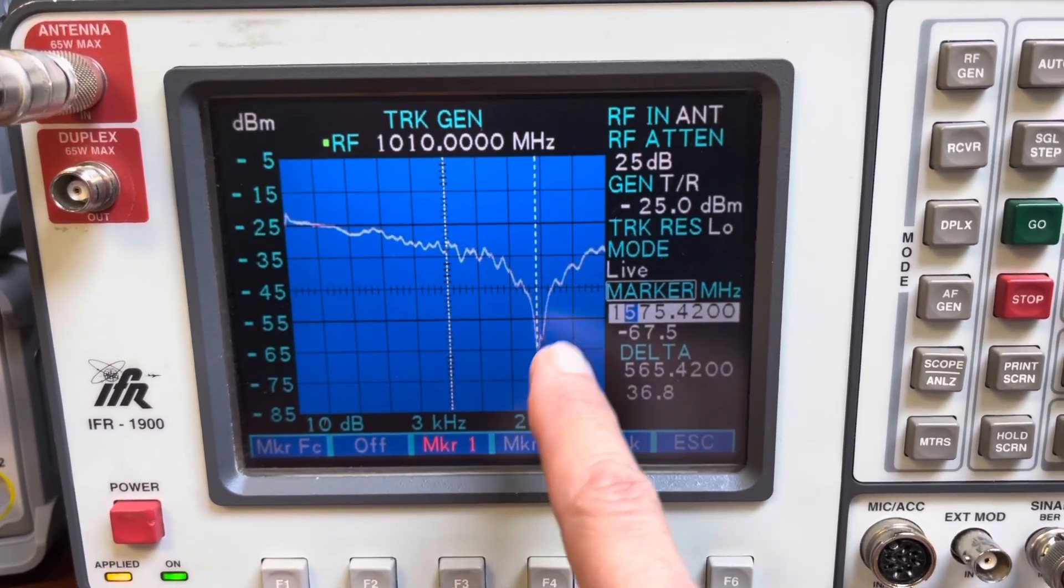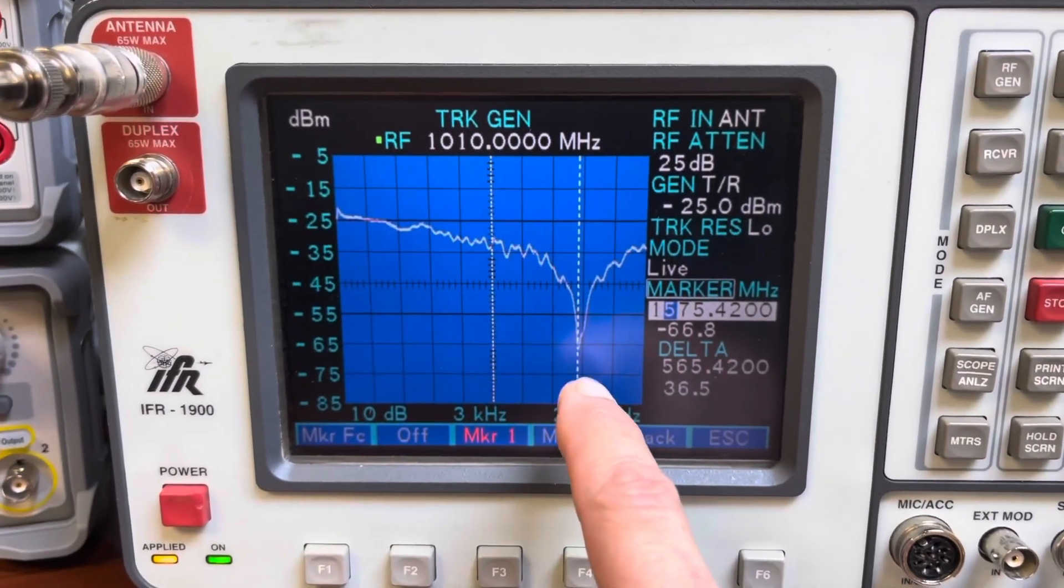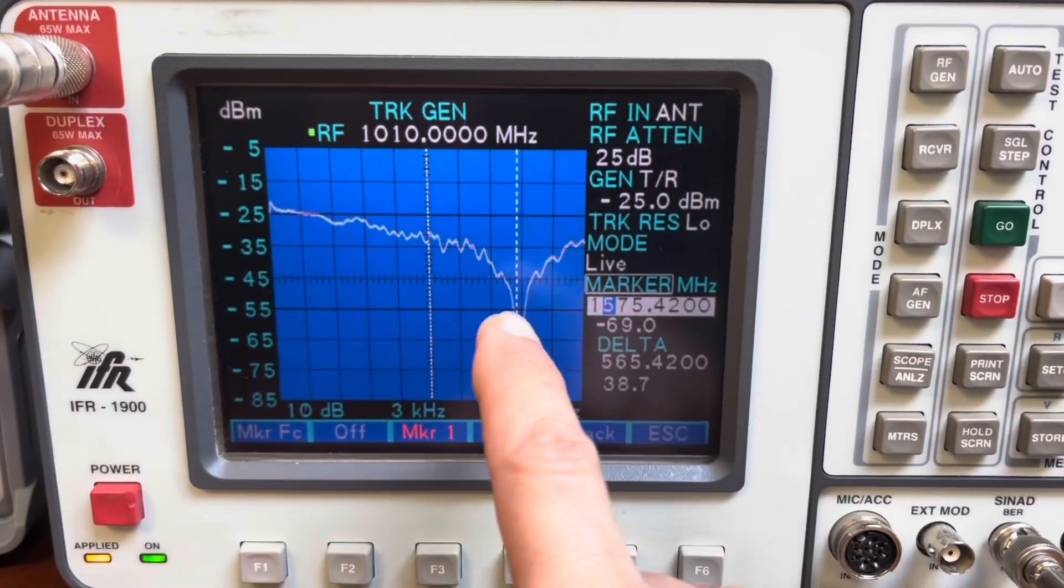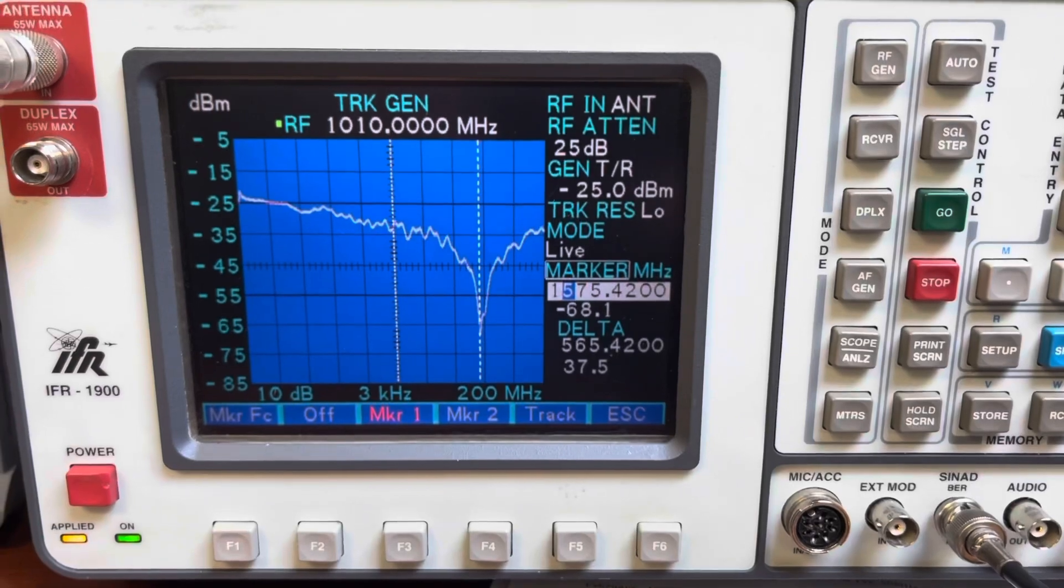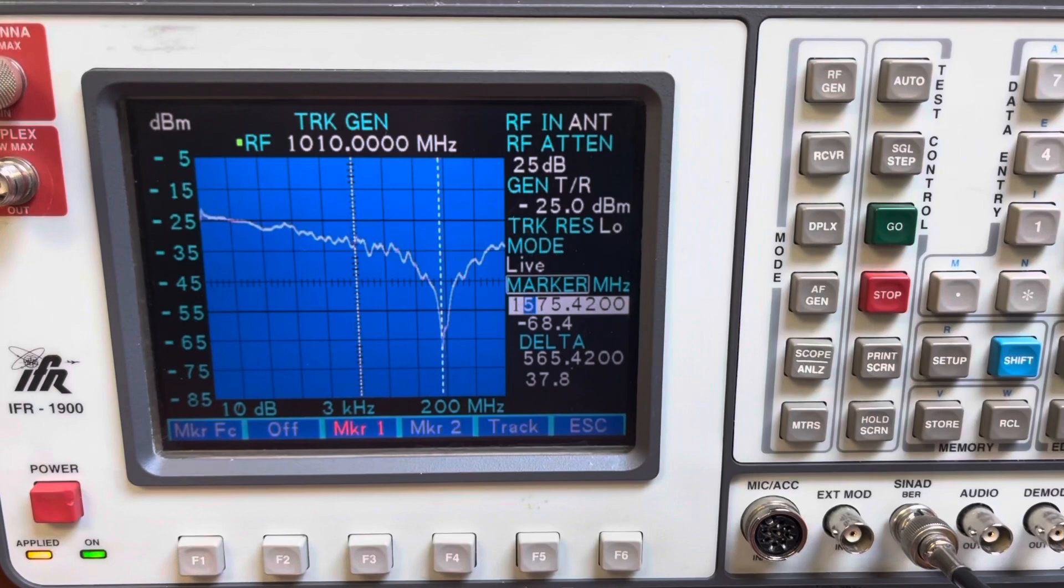You see it's attenuated by about 40 dB there, and that will keep us from losing our GPS acquisition in the airplane. This next segment I'll show you exactly what I'm talking about and I'll come back to the bench after that. So we'll be right back.